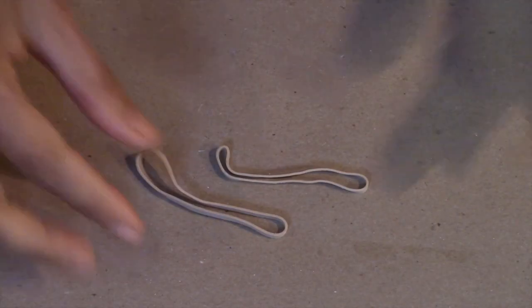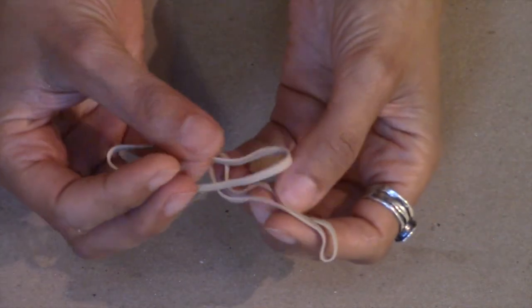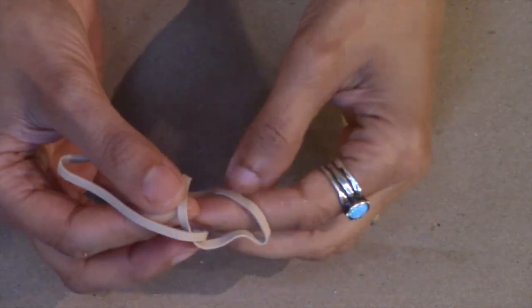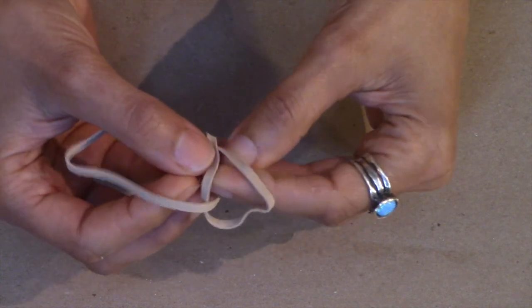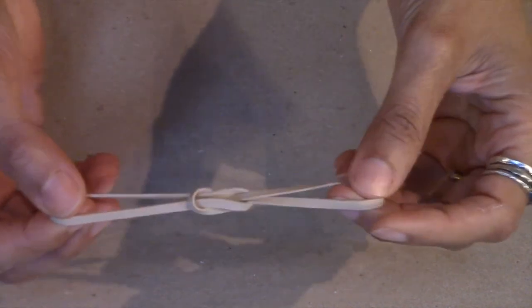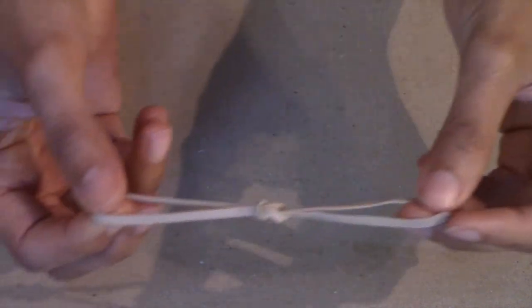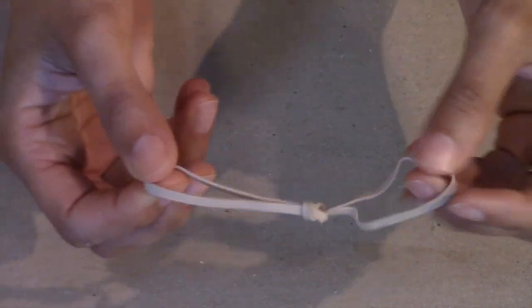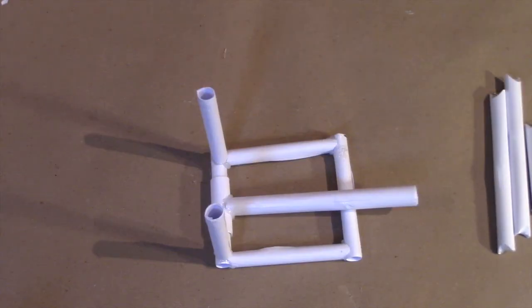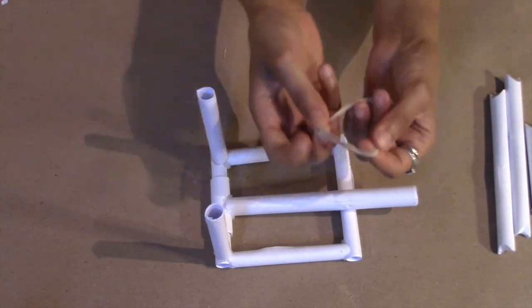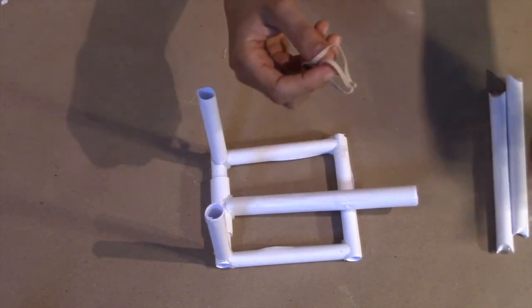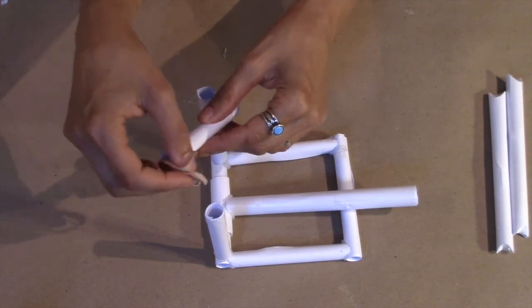Since my rubber bands are pretty small, I need to attach two of them together so that it makes a good size rubber band for my catapult. Now I'm just folding my rubber band in half and sliding the two loops over the smallest piece of tube, my three and a half inch tube.